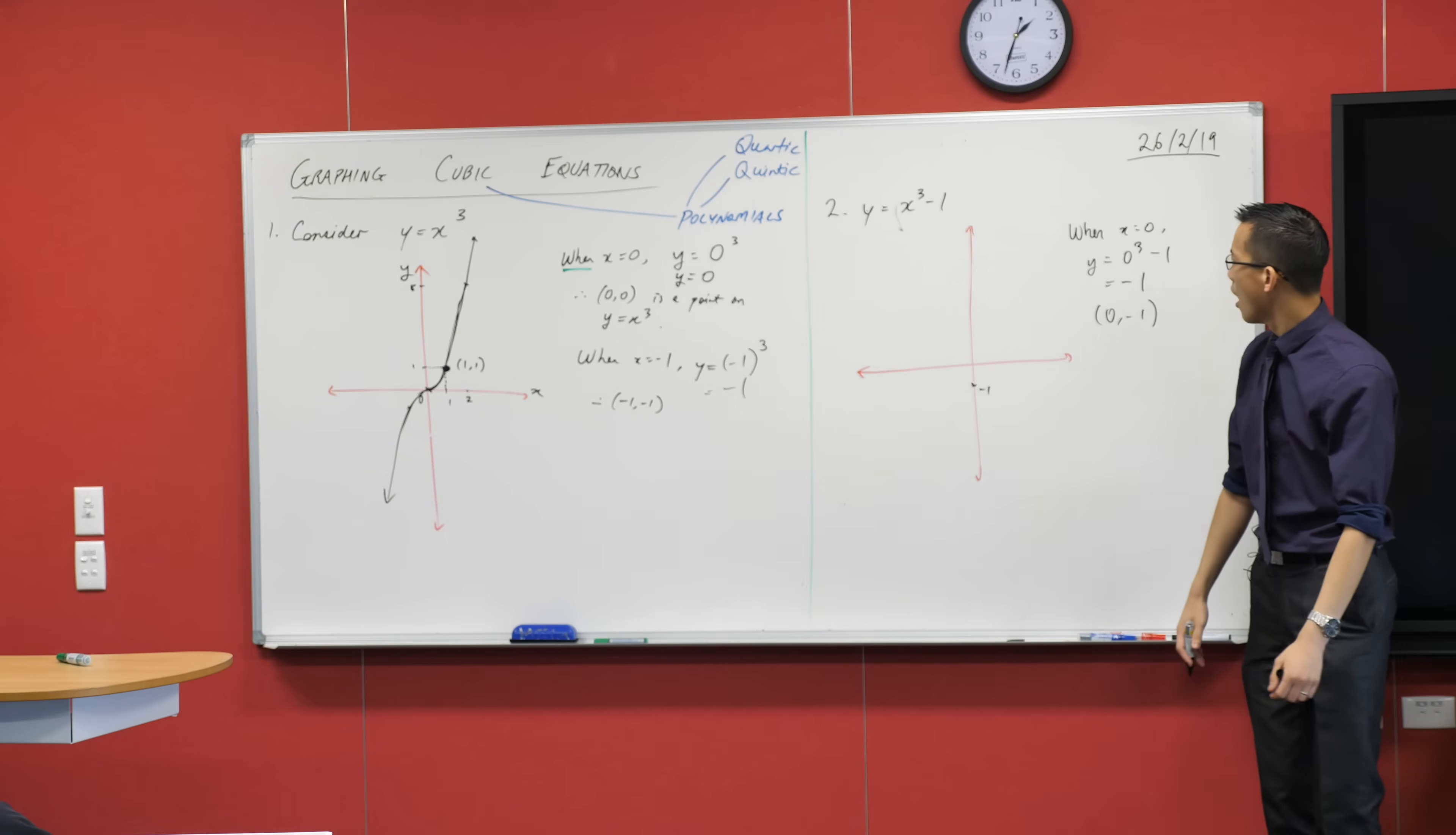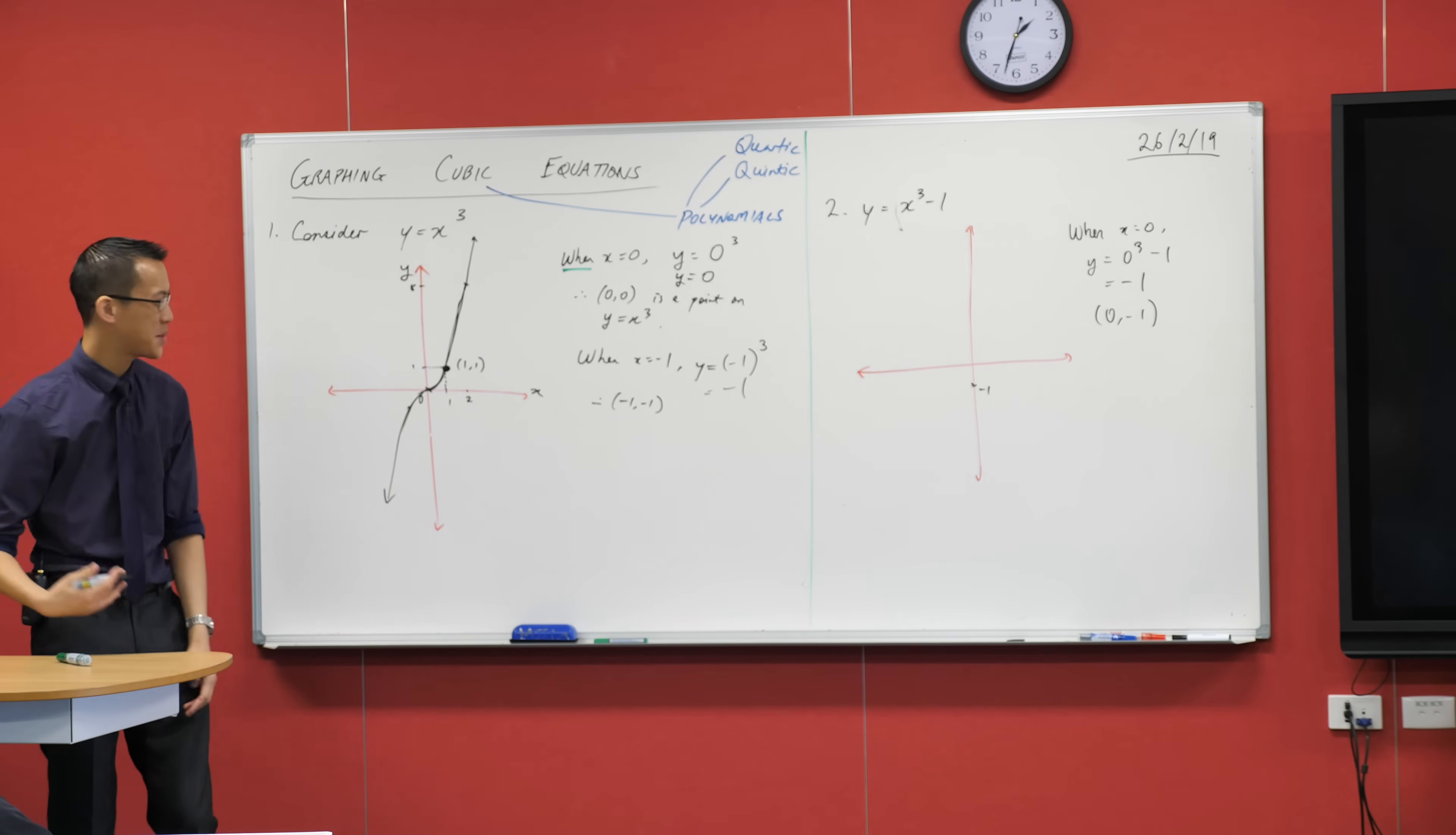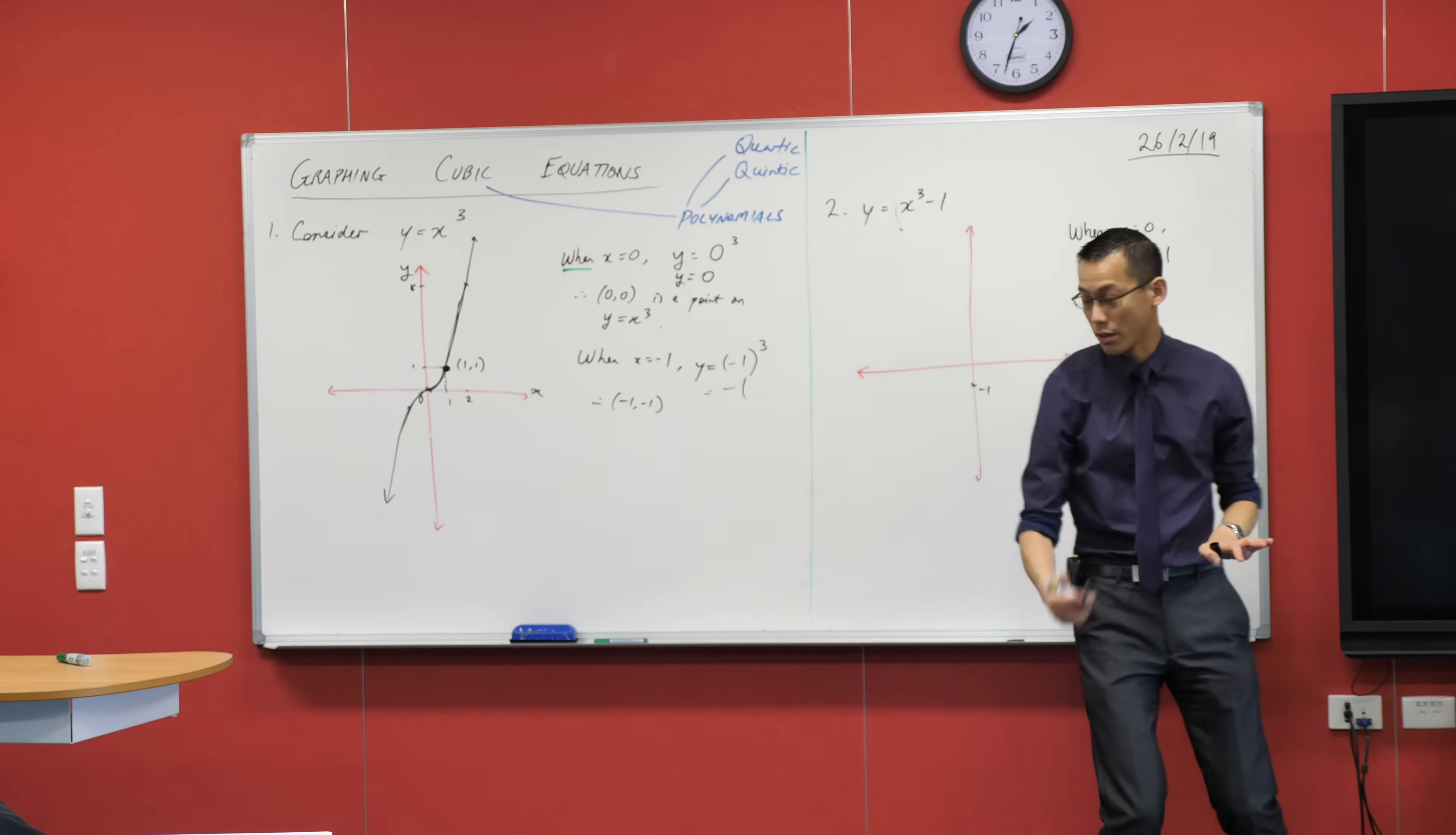Now I've only found a y-intercept. Over here when I did this one, I found an x-intercept and a y-intercept at the same time. It's kind of like, oh that's nice, a bit of a bonus. But I have not found an x-intercept, so I need to find one. If this is how I find a y-intercept, how do I find an x-intercept? Let y equals 0, right?